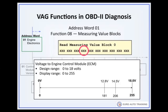Display group 4, for example, represents battery voltage to the engine control module. The display will be in the range from 0 to 255, representing the actual value in a range between 0 and 18 volts. Zero voltage is displayed as 0, and 18 volts is displayed as 255.